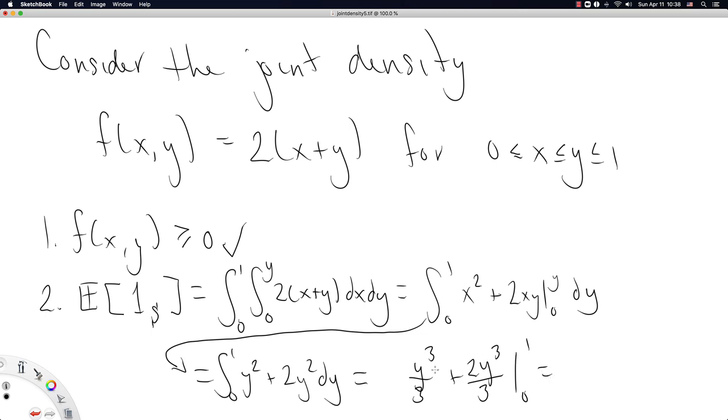Now we're going to plug in 1, and thankfully we'll plug in 0 for the second case, and everything's just going to go to 0. So really, we're just adding up 1 3rd plus 2 3rd is equal to 1. Check. The area under this density function across the support is equal to 1, just as it should be. It took us a little bit to make sure we got the integral correctly, but once you do, this problem does work out as it should.